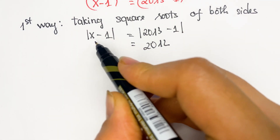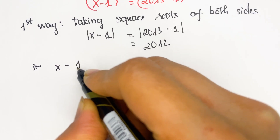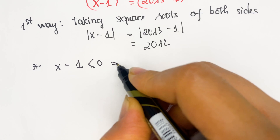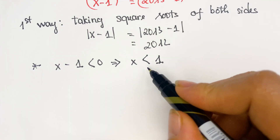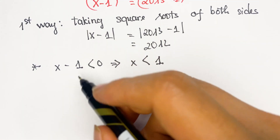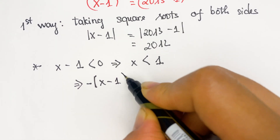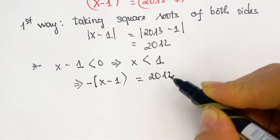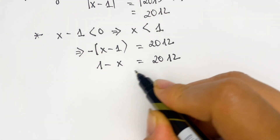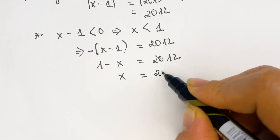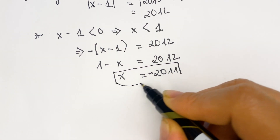For the absolute value, we consider two cases. Firstly, when x minus 1 is less than zero, therefore x is less than 1. In this case we can rewrite the equation as minus (x minus 1) equals 2012, so 1 minus x equals 2012, therefore x equals minus 2011.